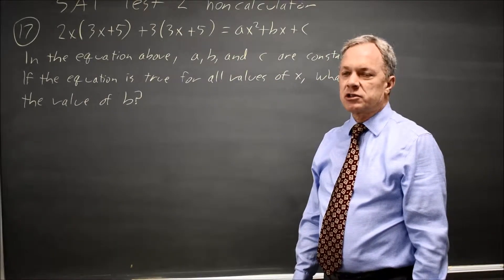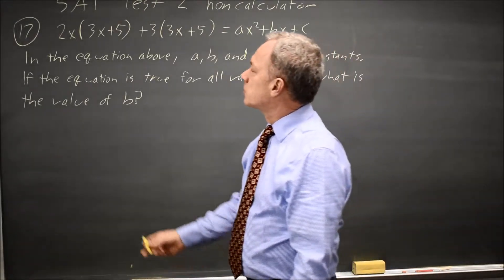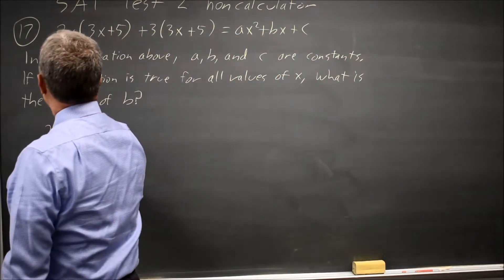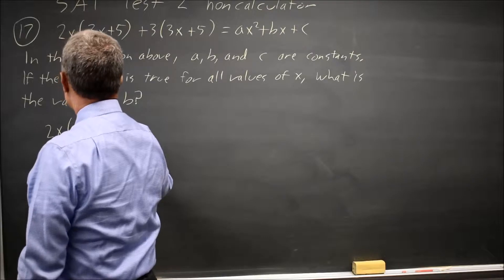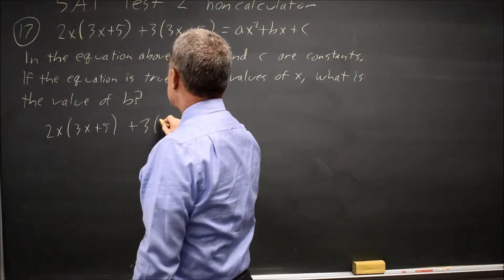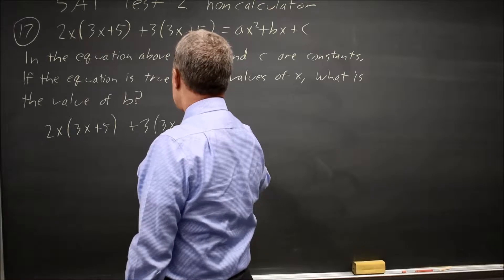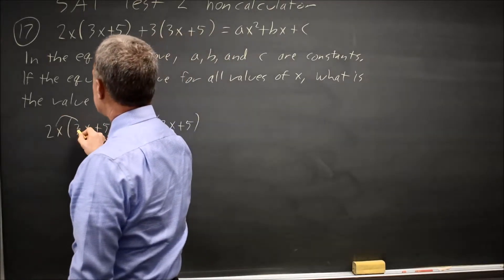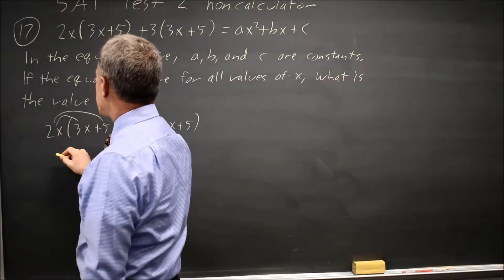To find this, we're going to have to distribute. So let's distribute 2x times 3x plus 5 plus 3 times 3x plus 5, and to distribute, I'm going to multiply the 2x times 3x and by the 5.